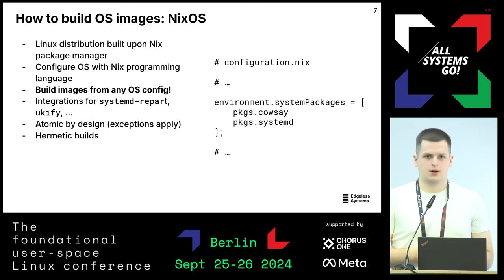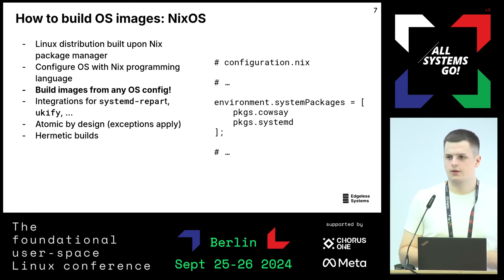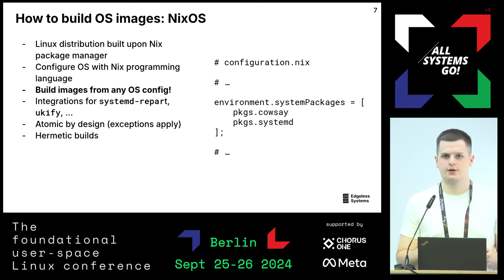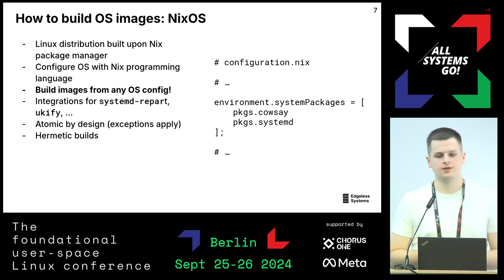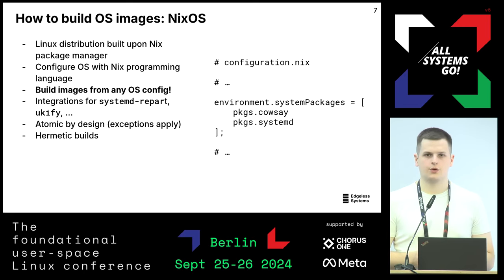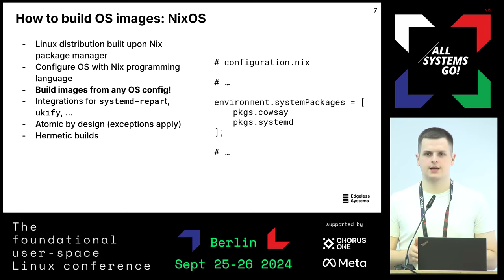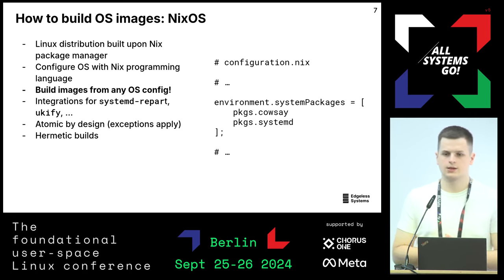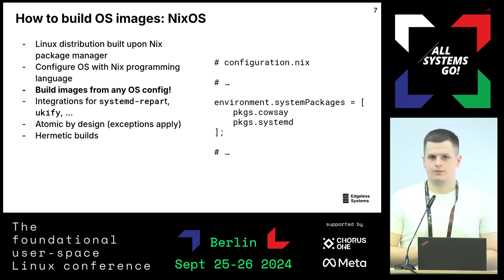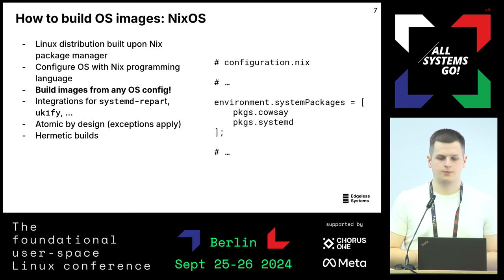NixOS is an atomic distro with a transactional update scheme, and it's also immutable — the user is not allowed to write into the Nix store where the actual software is stored and linked into the operating system, so it's hard to break things. Nix and NixOS are great for reproducibility because they have hermetic builds: builds are strictly sandboxed and can only access inputs you've specified very concisely.